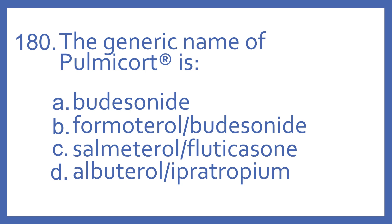Number 180. The generic name of Pulmicort is: A. Budesonide, B. Formoterol with budesonide, C. Salmeterol with fluticasone, or D. Albuterol with ipratropium.